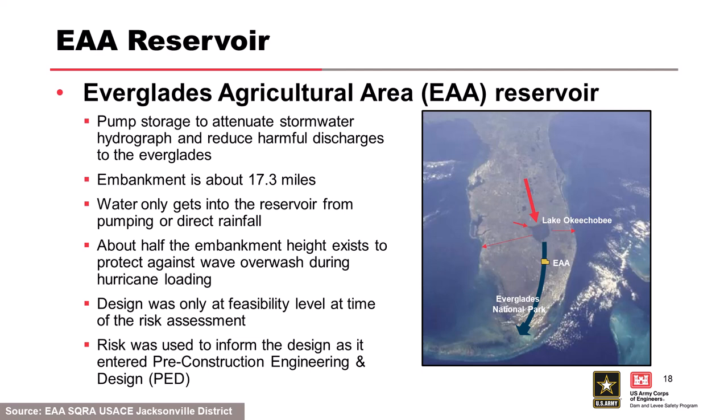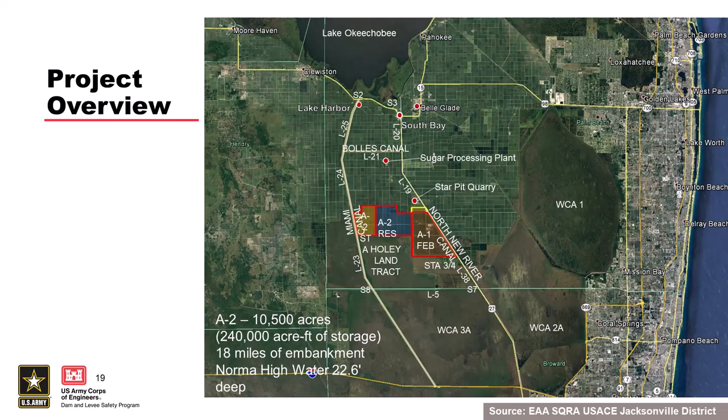This project is the Everglades Agricultural Area Reservoir — EAA — a pumped storage reservoir south of Lake Okeechobee. All rainfall and runoff from central Florida ends up in Lake Okeechobee. To address water quality and better manage lake levels, new storage areas are being built south of the lake to park water temporarily. They're pumped storage — off-river — getting water only from direct rainfall or when pumped in, making them somewhat unique.